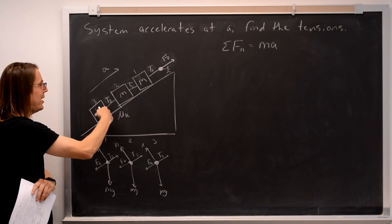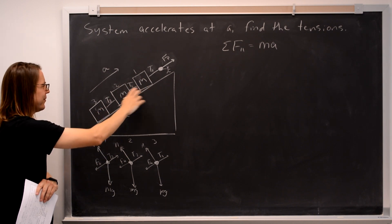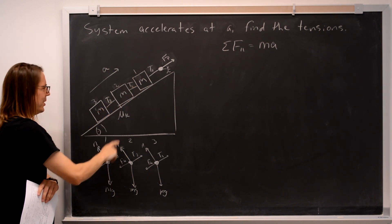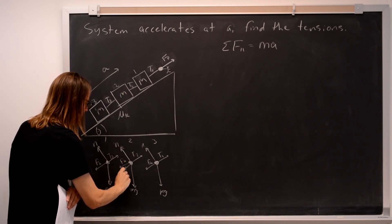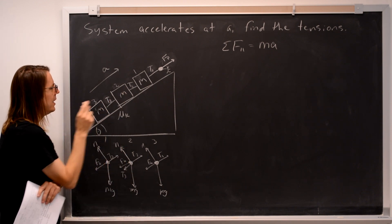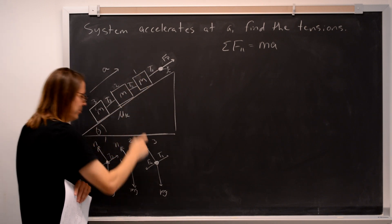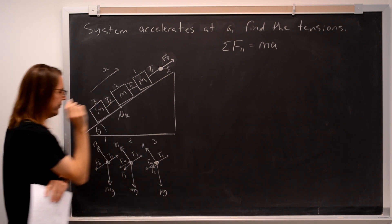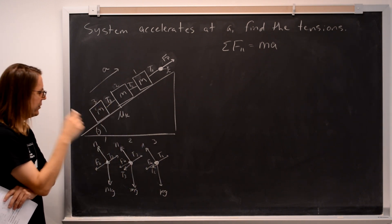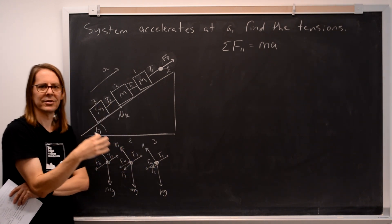We left out the tension pulling back. The reason the tensions are different is because this one is pulled forward by T3. This one's pulled forward by T2, but it's pulled back by T3. There's one more force in there. This one is pulled forward by T1, but it's pulled back by T2. There's another force in there pulling back. So that's what throws off the balance and makes the tensions not all the same.